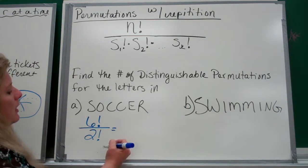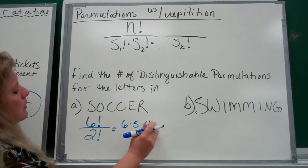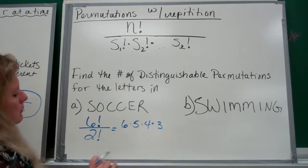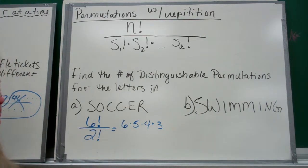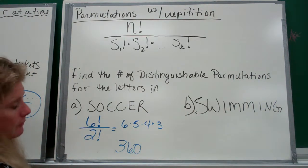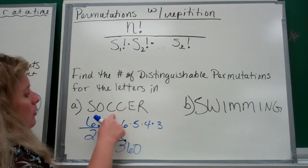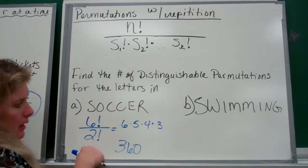That means this is going to be 6 times 5 times 4 times 3. So the number of distinguishable combinations of the word SOCCER is 6 times 5 times 4 times 3, which is 360. There was only one thing that repeated, so there's only one thing in the denominator here.